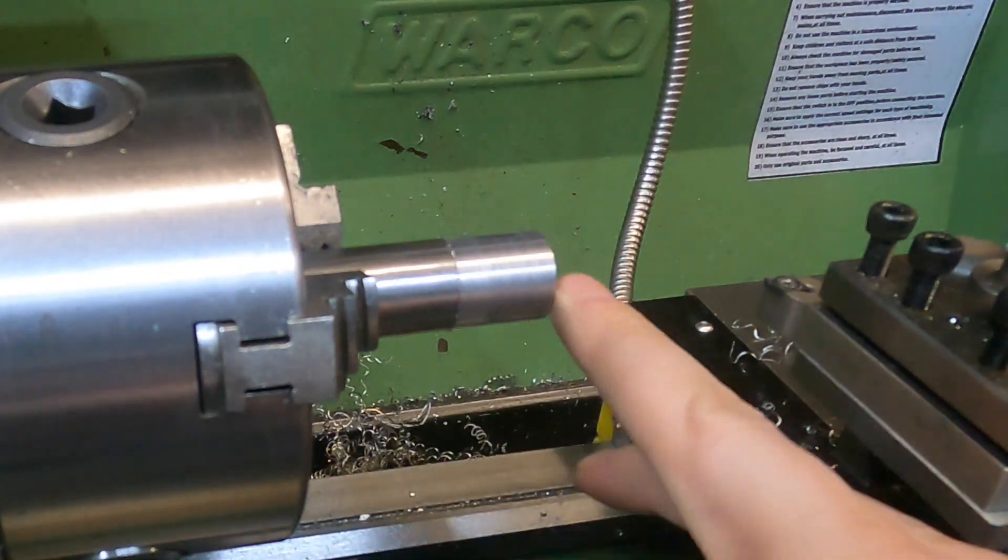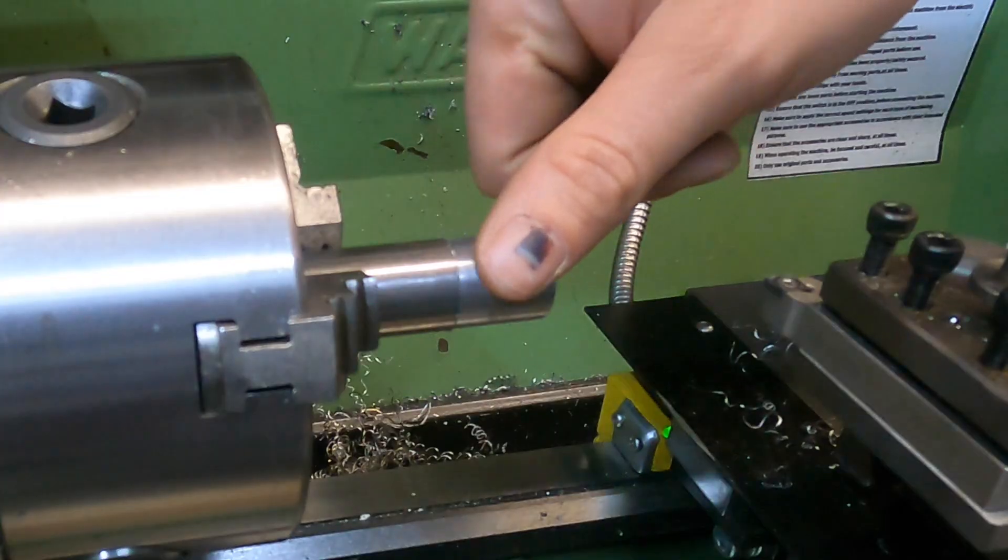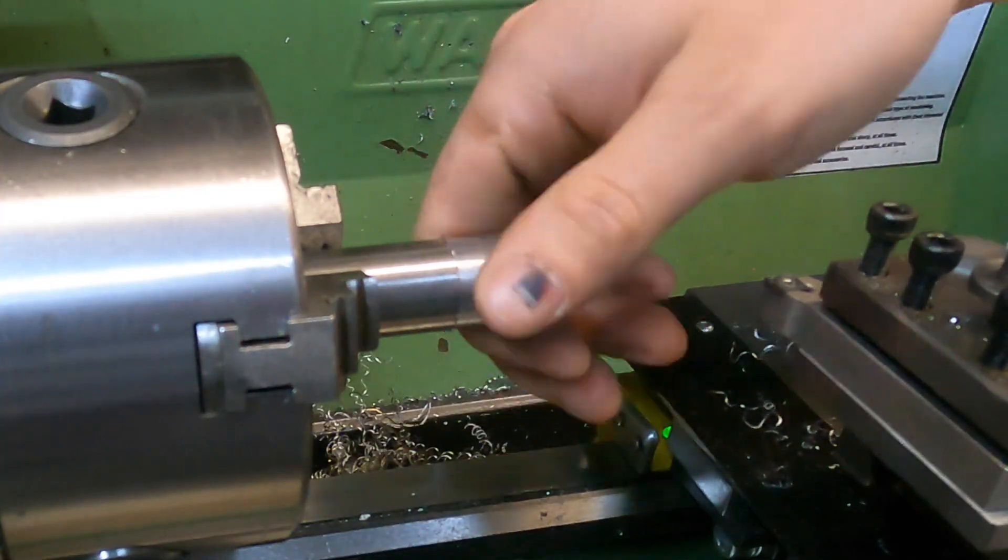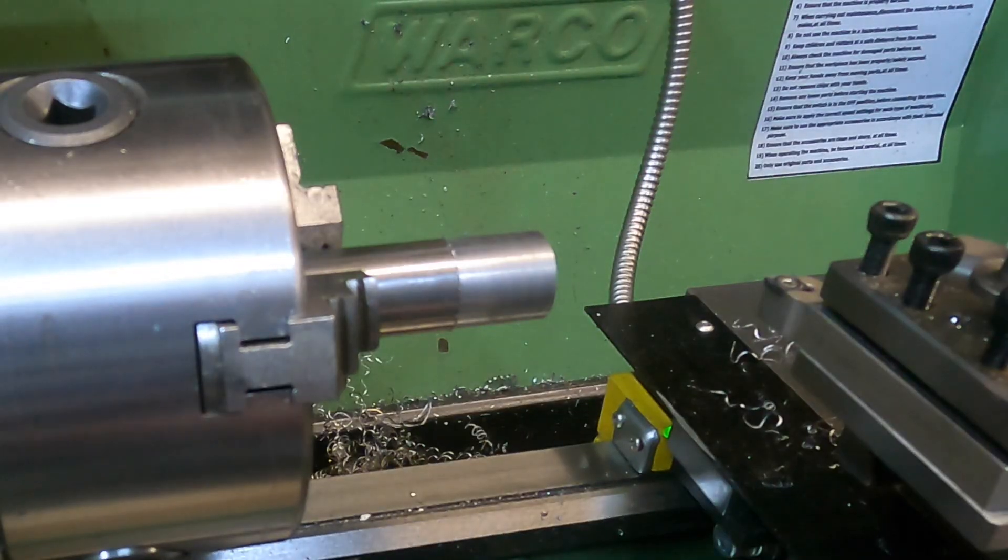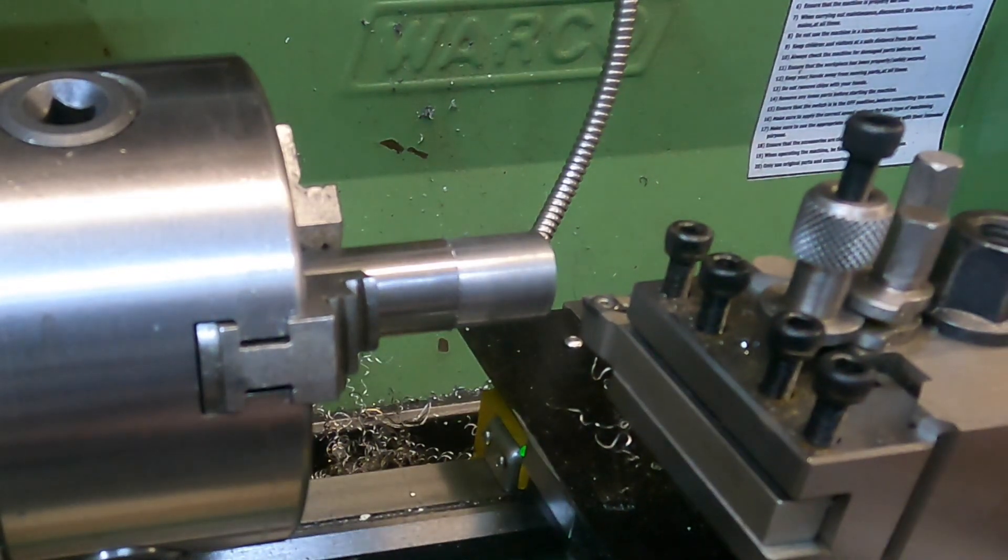So first impressions of that is that is a really nice finish on there for mild steel on this lathe. The facing off pass is also really nice but I'm especially pleased with how good the finish is on that. I'm now going to dial in a depth of cut of 0.5 millimeters this time and we're going to see how that copes.